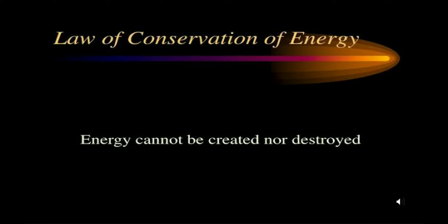Now you all have heard that energy cannot be created and cannot be destroyed — it just changes from one form to the other. You must have also come across the equation E = mc², where E is the energy, m is the mass of the object, and c is the velocity of light. You will study this formula in depth in further classes, but it is related to conversion of energy from one form to the other depending on its mass.